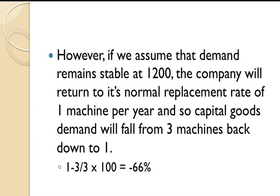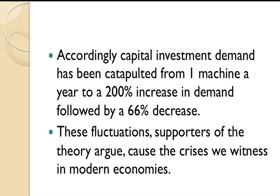However, if we assume that demand remains stable at 1,200 after that, the company will return to its normal replacement rate of one machine per year, and capital goods demand will fall from 3 machines back down to 1 — a 66% decrease in capital goods demand. Accordingly, from what we see from the accelerator model, capital investment demand has been catapulted from one machine a year through a 200% increase, followed by a 66% decrease. Supporters of the theory argue these fluctuations cause the crises we witness in modern economies — i.e. the business cycle.